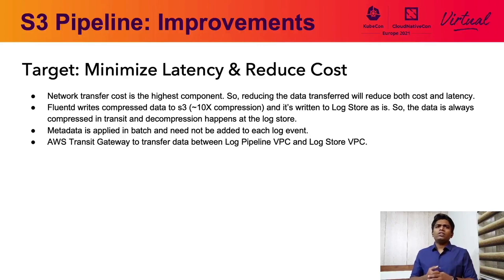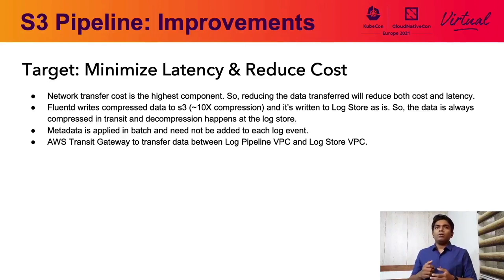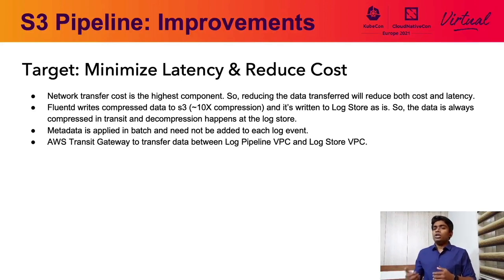Just this one change cut down the data transferred to one-tenth the volume compared to before. Also, as we are applying the metadata in batch for an entire S3 object, each log event need not have the metadata along with it. This was giving us large savings in the amount of data transferred by cutting down the size of each raw log event, compared to the previous streaming pipeline. We also set up an AWS transit gateway between our log pipeline VPC and the log store VPC. This was giving us around 60% cost savings as opposed to sending the data over the internet using an API gateway.